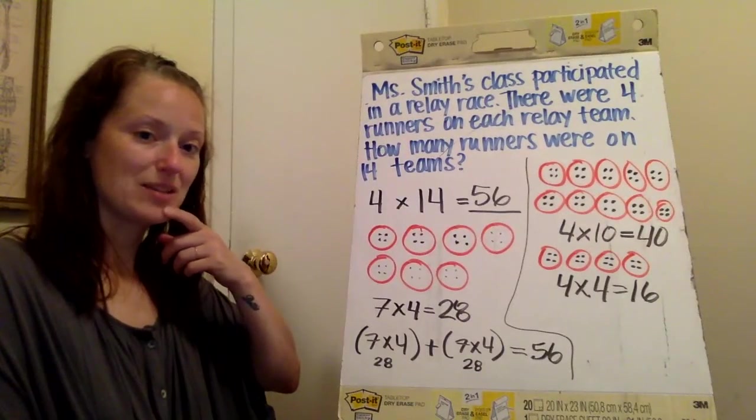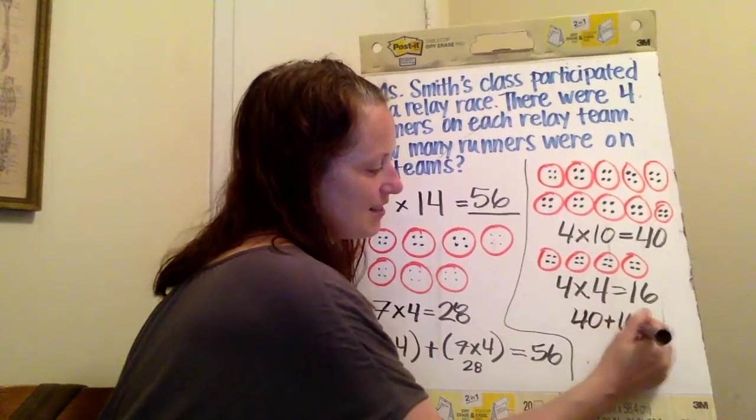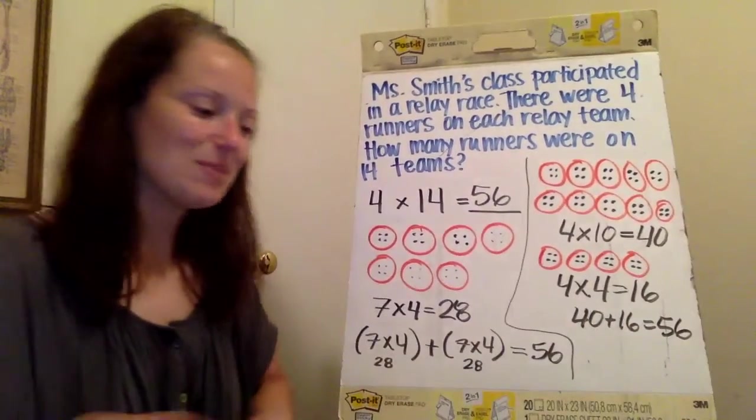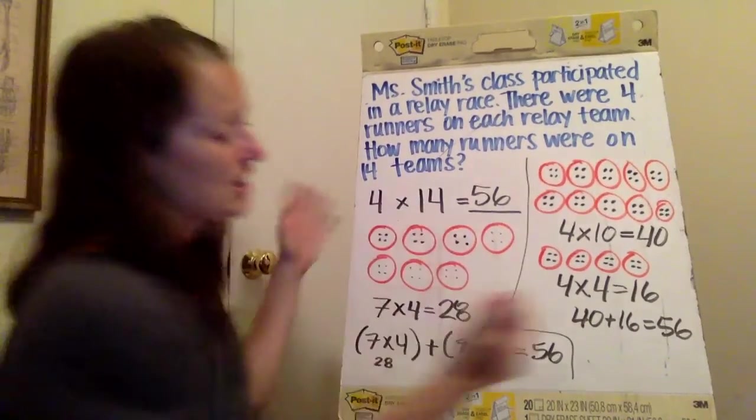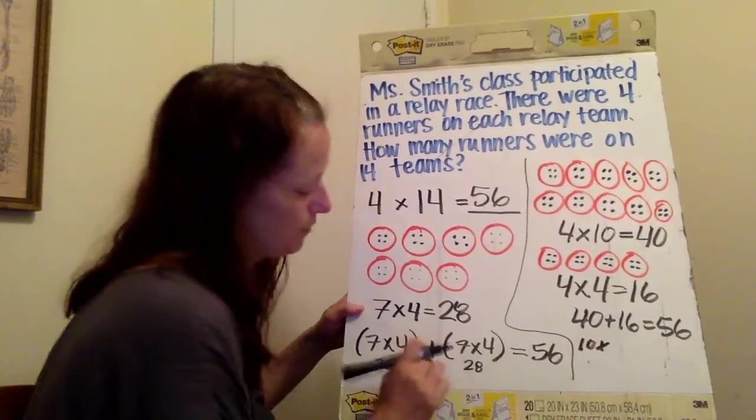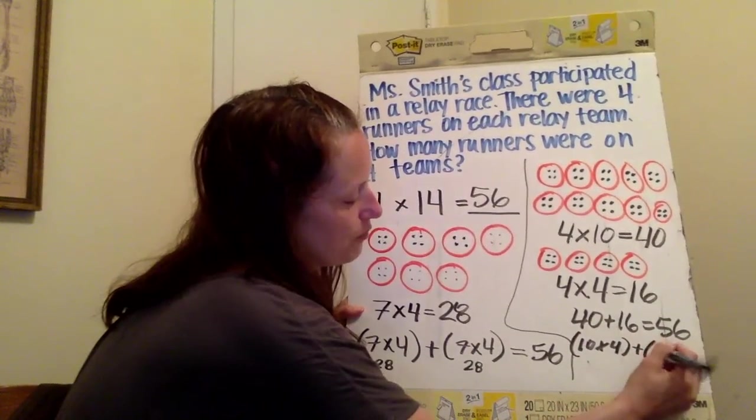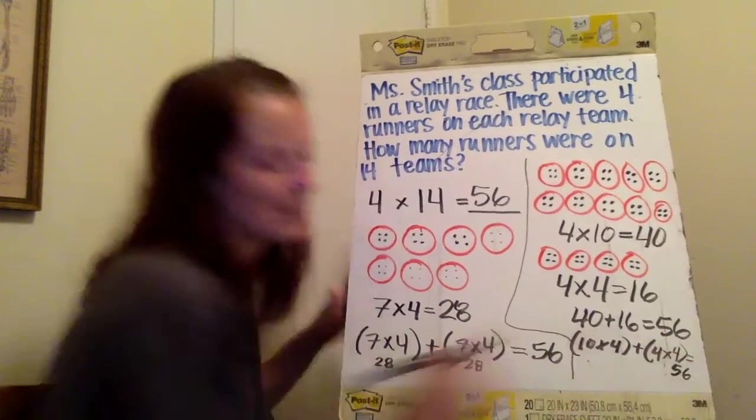It's my 40 plus 16 gets me to 56. Beautiful. So you're going to solve some problems just like this. So actually, I could say that or I could say, I want to keep it like this, 10 times four plus four times four equal to 56.